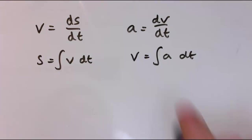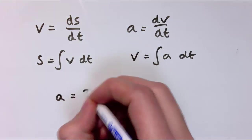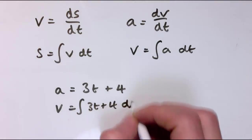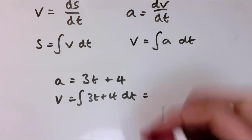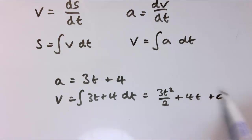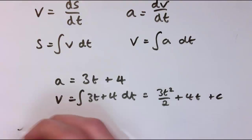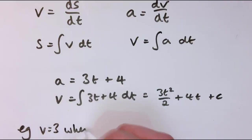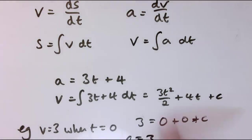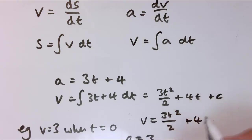The usual caveat is that when I integrate a function, I get a constant of integration. For example, if acceleration is given by 3t + 4, to get the formula for velocity I integrate 3t + 4 with respect to time, giving 3t²/2 + 4t + c. To find c, I need extra information — for example, if v = 3 when t = 0, then substituting gives c = 3, so velocity = 3t²/2 + 4t + 3.